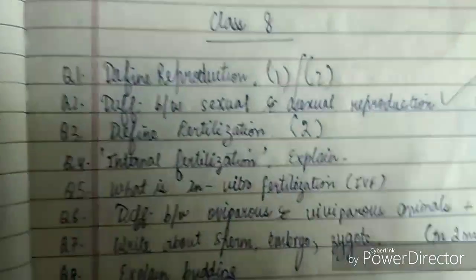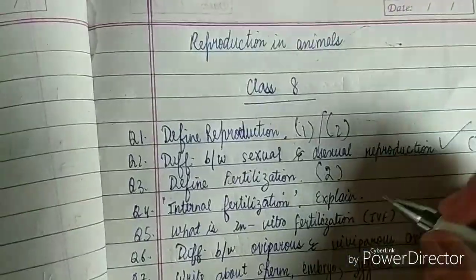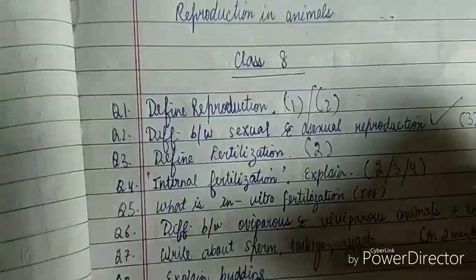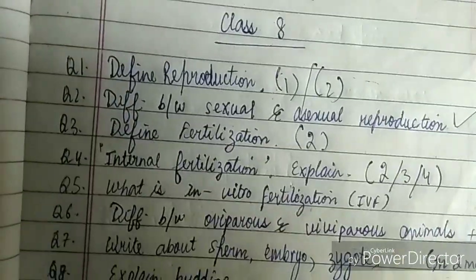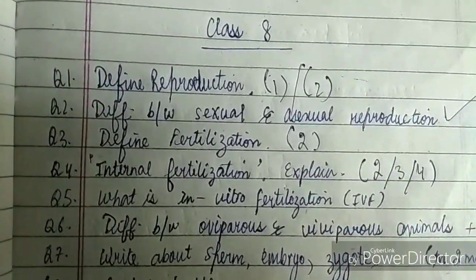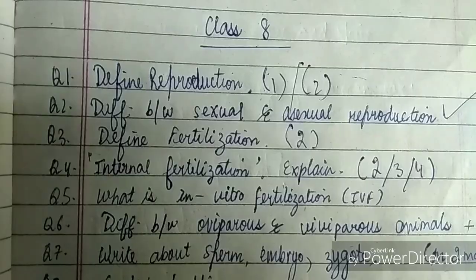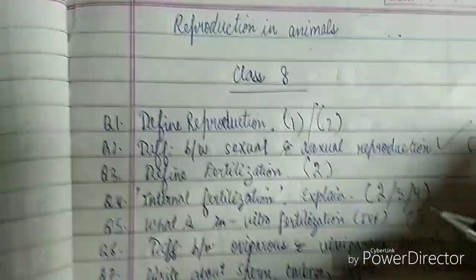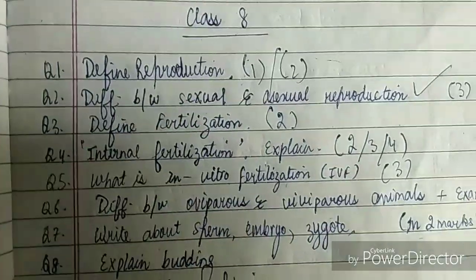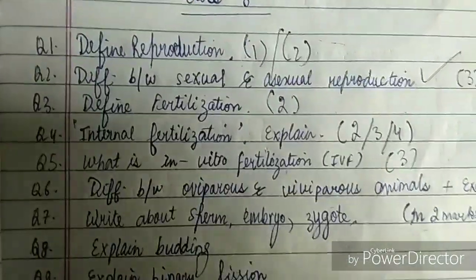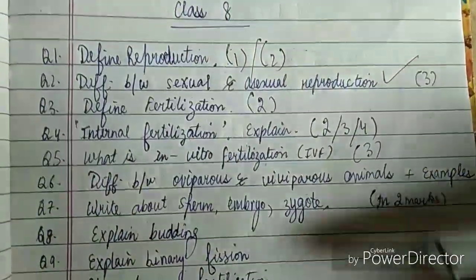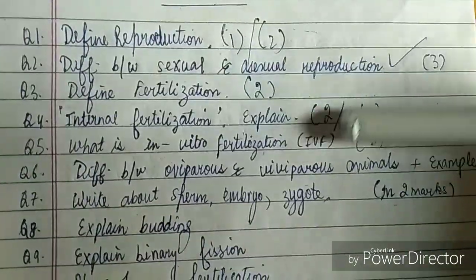Explain internal fertilization — this can be asked for two marks, three marks, or four marks, so it's important. What is in vitro fertilization, or IVF, is very important for three marks. The whole box is given in the book, and the test tube baby box is very very important.